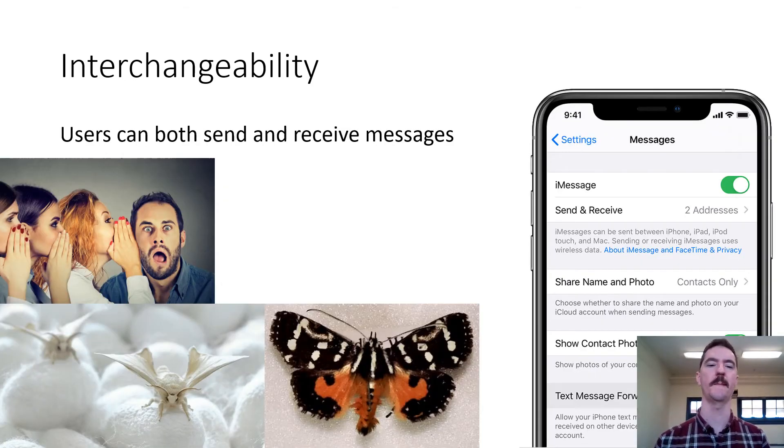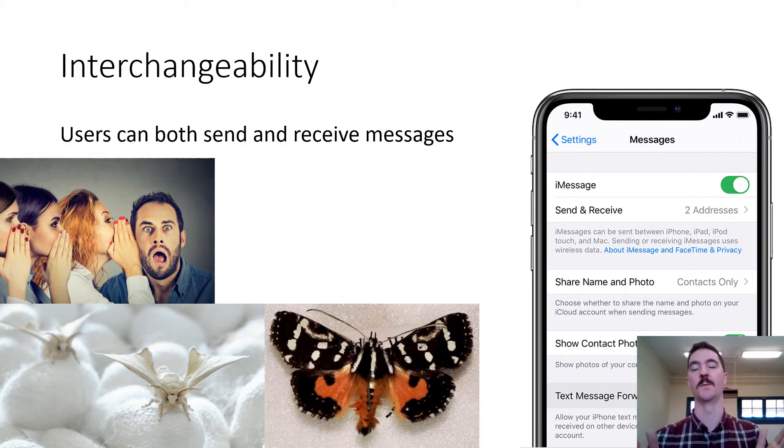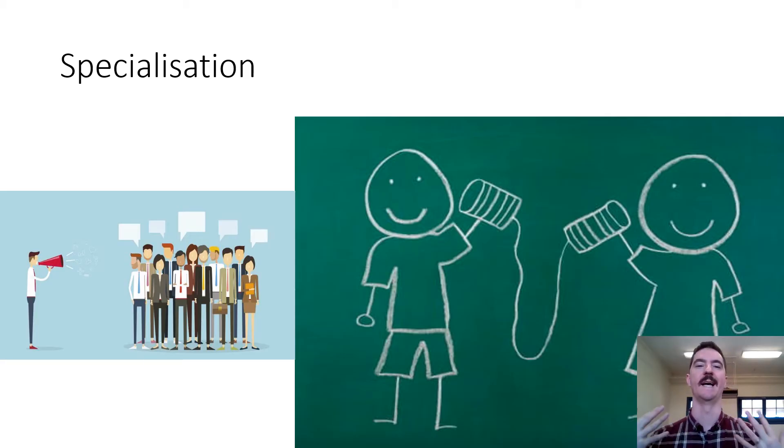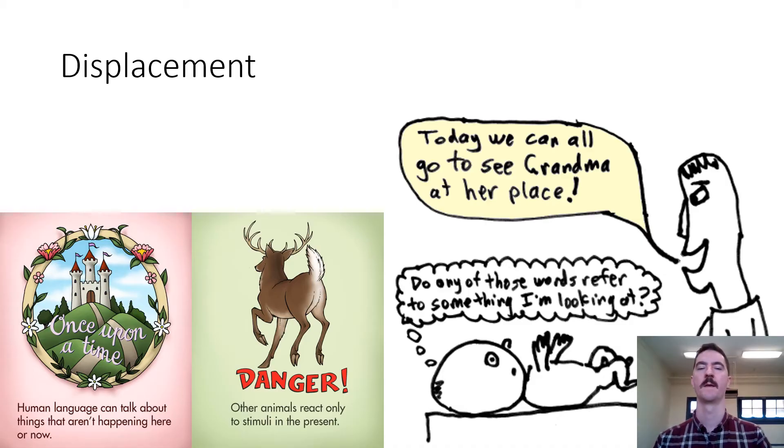Interchangeability basically means you can hear a message, you can communicate a message, it's not a one-way thing. Some animals can communicate but they can't receive or vice versa. Specialization: the purpose of human language is to communicate, and that's what it's for, whereas some animal languages have a primary purpose which is different.